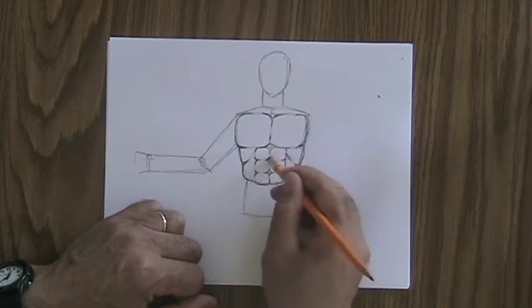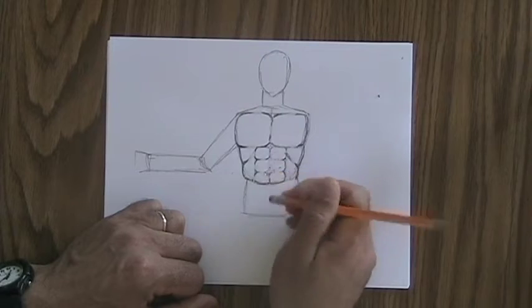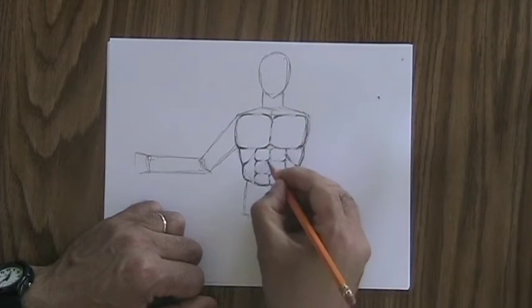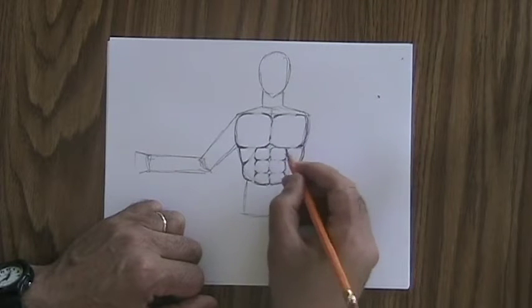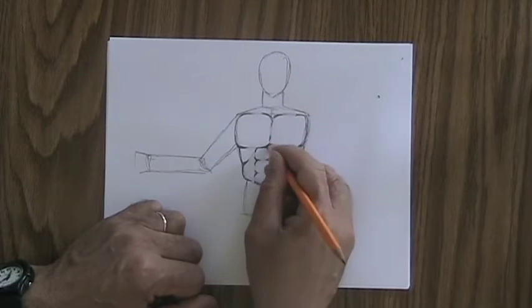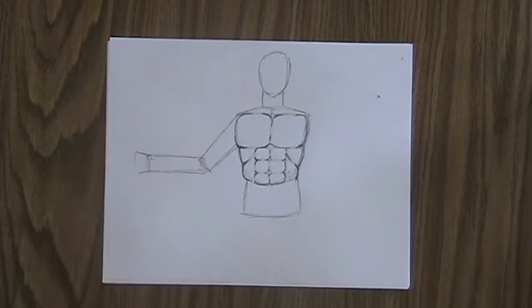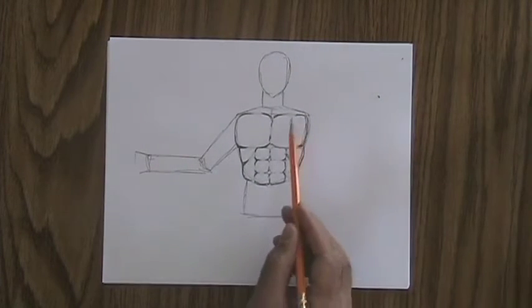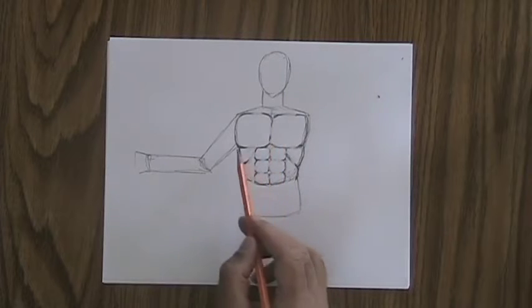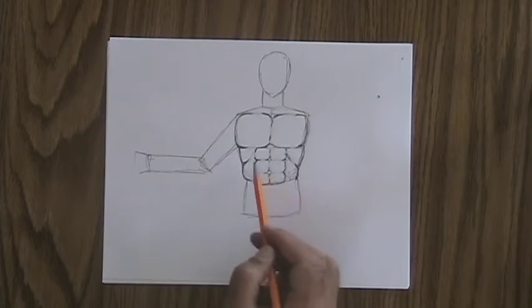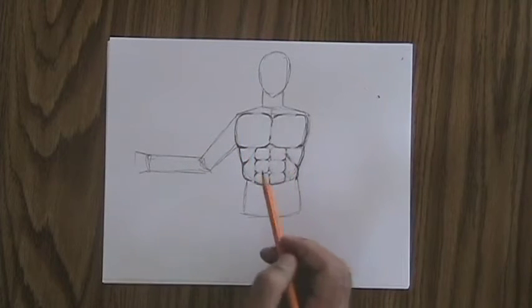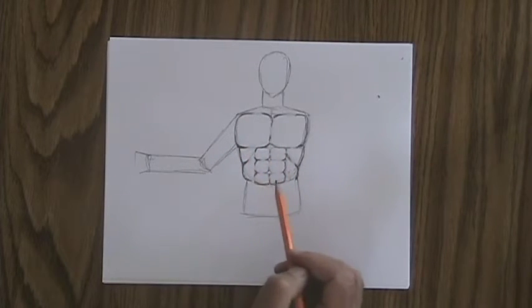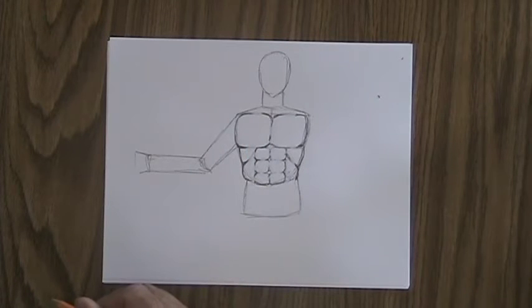You could get to the point where you've taken out almost all the lines. Depends basically on how hard this person works out in the gym or how many ho-hos this person likes to eat while they're sitting on the couch all day long. So there, just by dividing that torso into rectangular sections and then rounding off the edge of those rectangles, we put together the muscles of the torso.